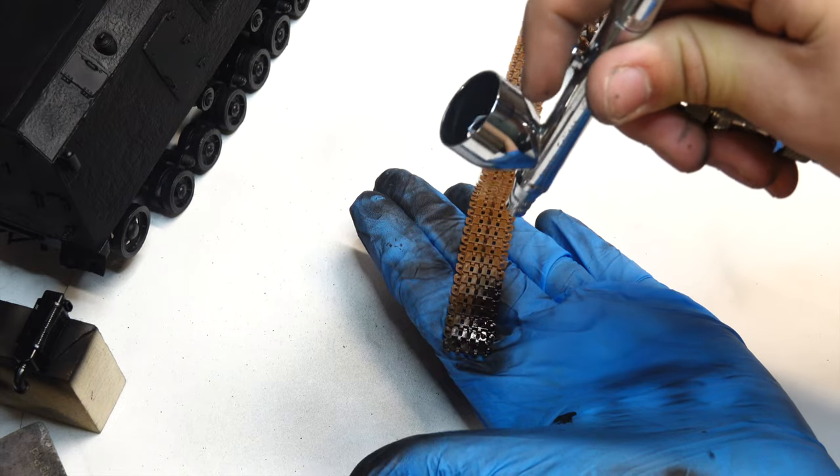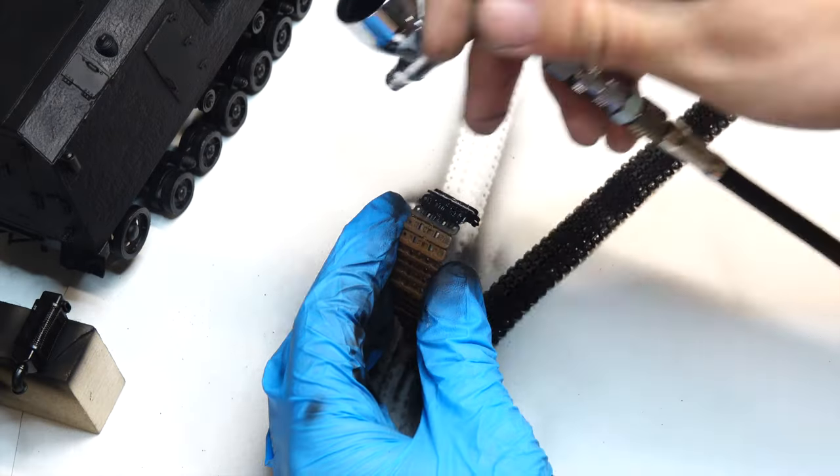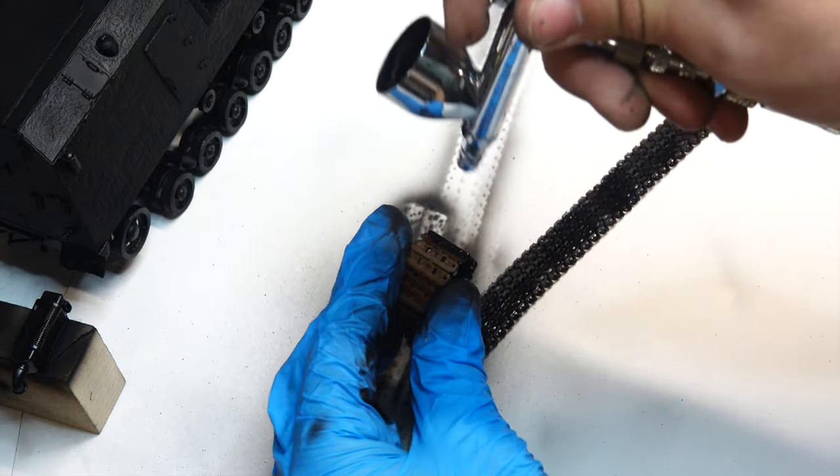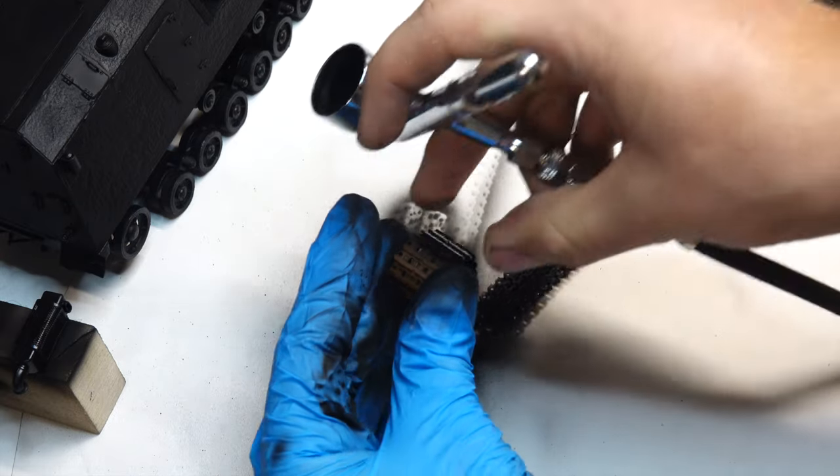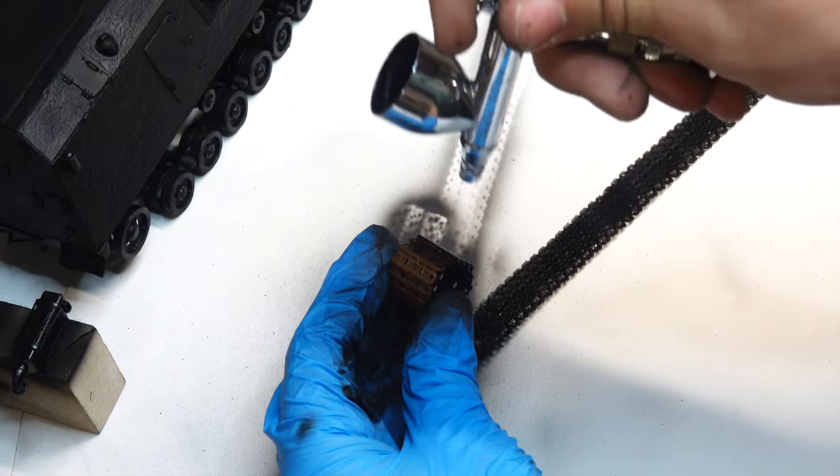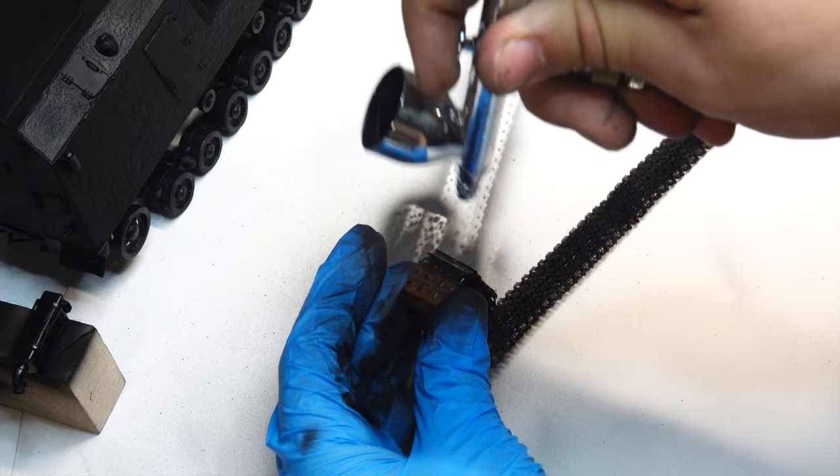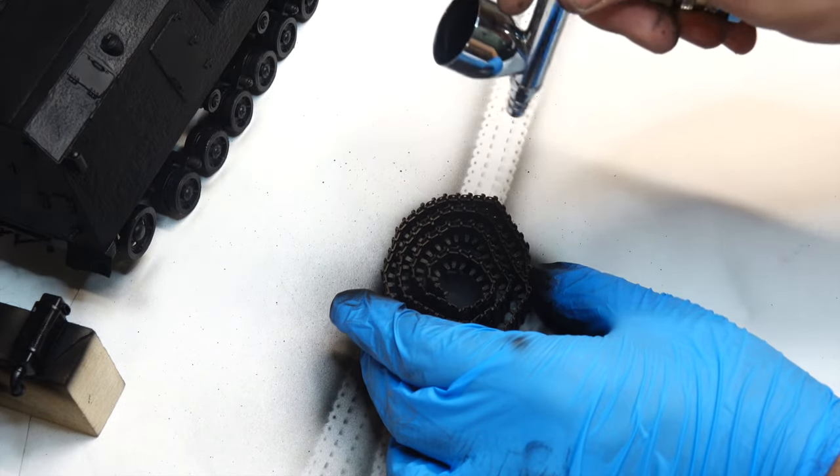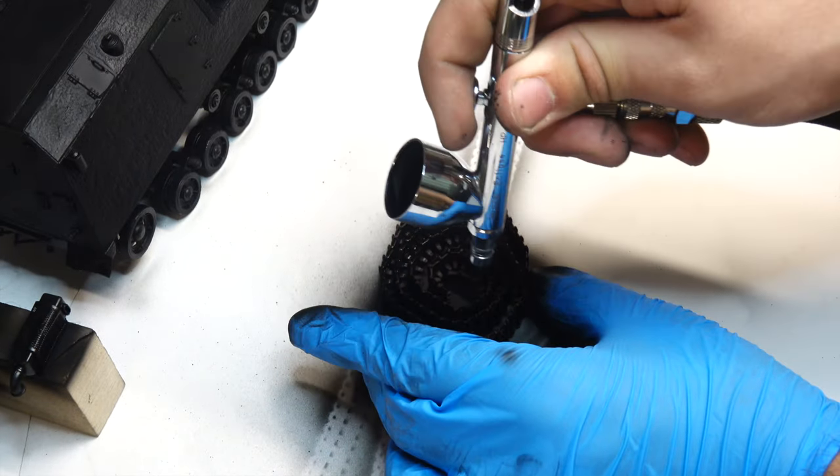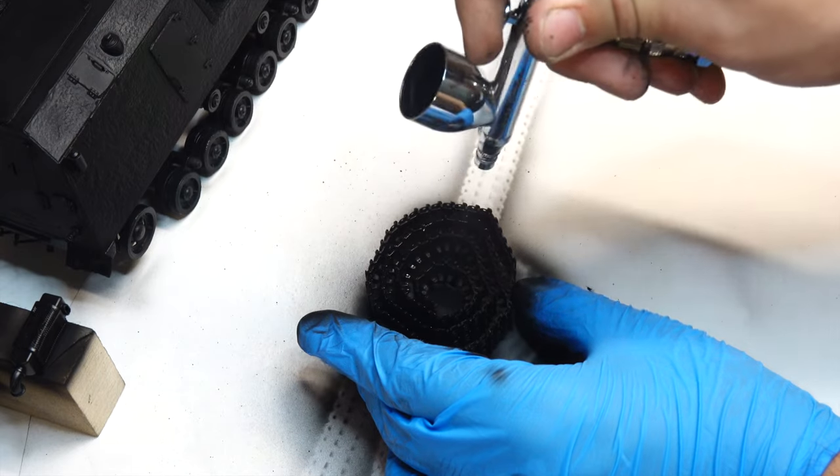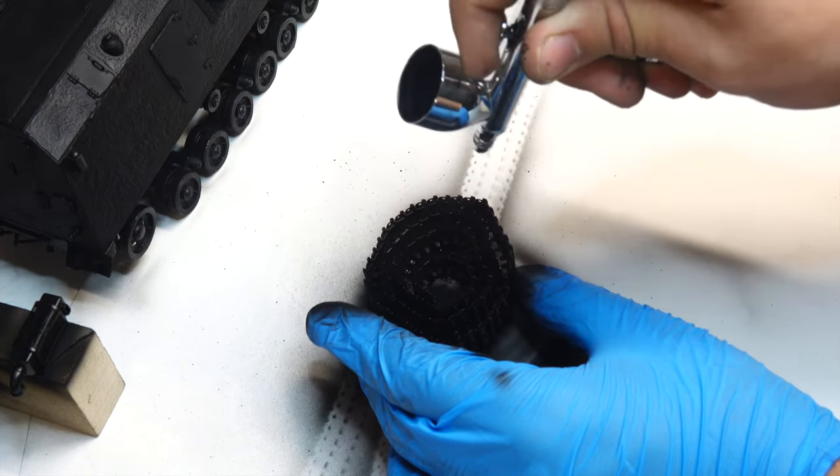Priming the tracks is a bit more tedious, as there is a greater length of them, and you have to make sure to paint each crevice. Across all parts of this tank, I'm making sure to get into every nook and cranny. It's especially more important at this stage, since missing spots with future layers of paint will just look like shadows, while it would look rather odd with bare plastic showing through.